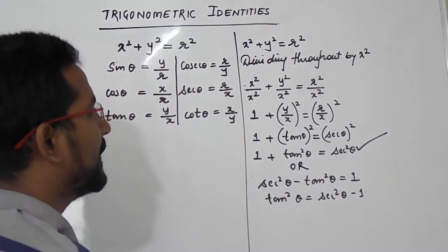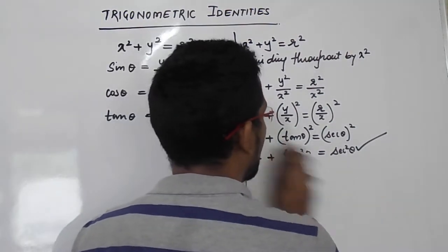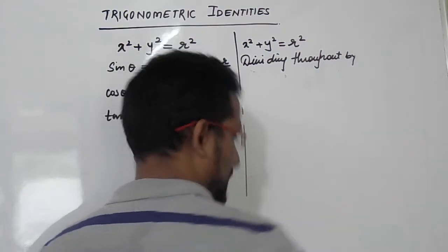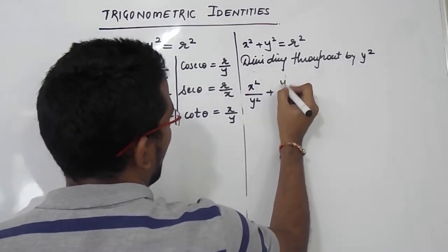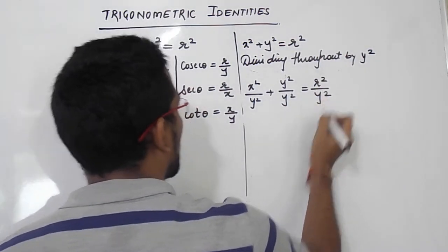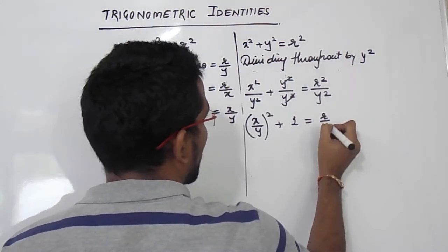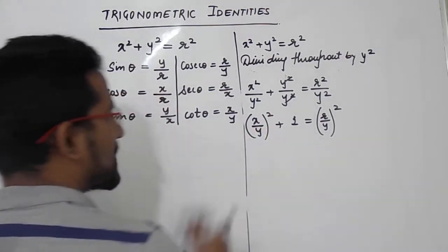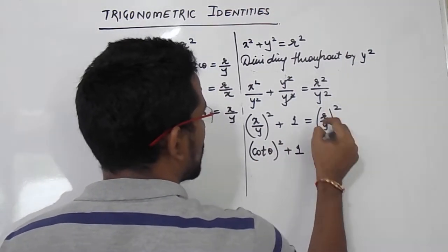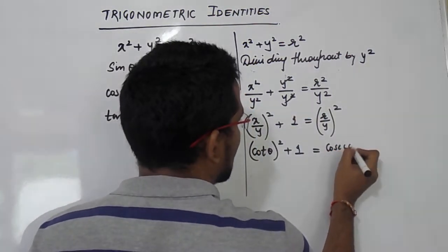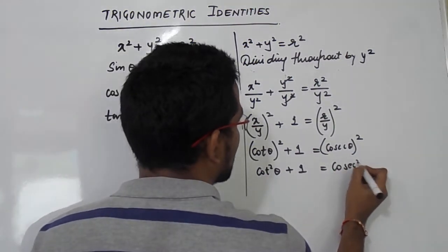Now we will see the last identity. We have divided by r² and by x²; now we will divide by y². Dividing x² + y² = r² throughout by y² gives us: x²/y² + y²/y² = r²/y². This simplifies to (x/y)² + 1 = (r/y)². Now, x/y is nothing but cot θ, and r/y is nothing but cosec θ. So we get cot²θ + 1 = cosec²θ.